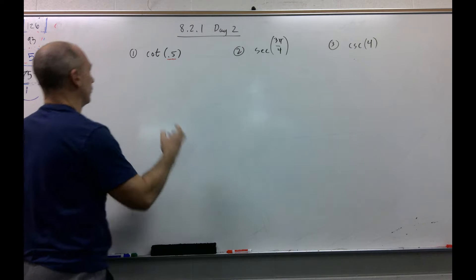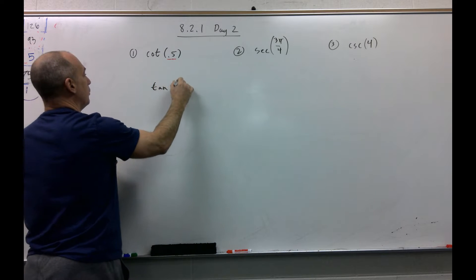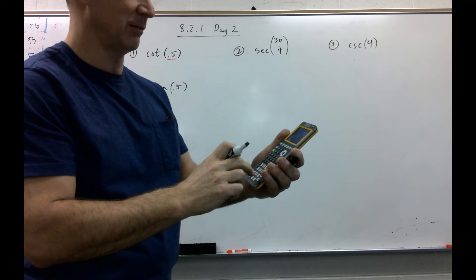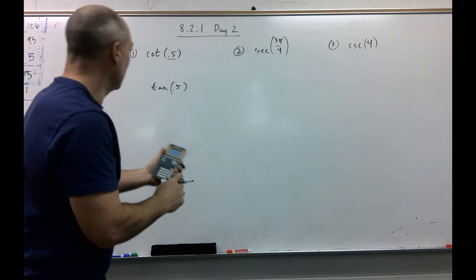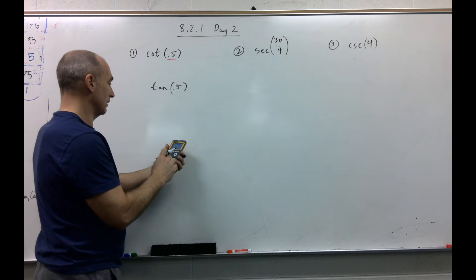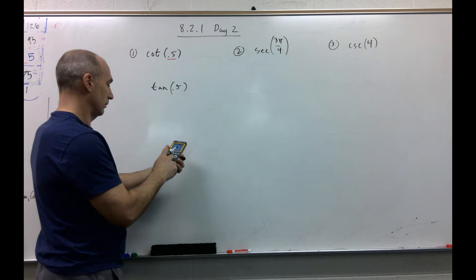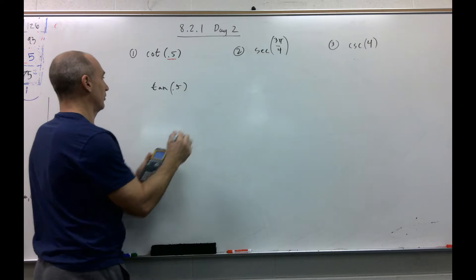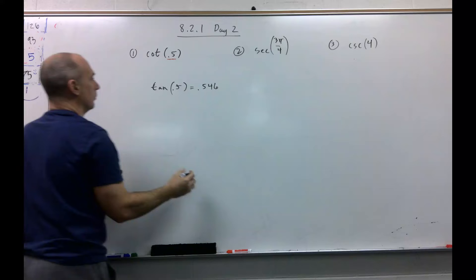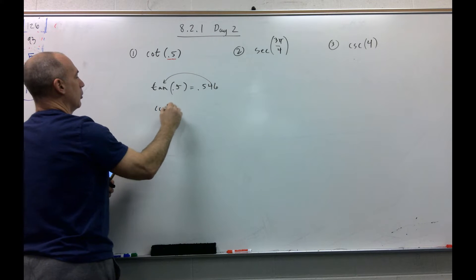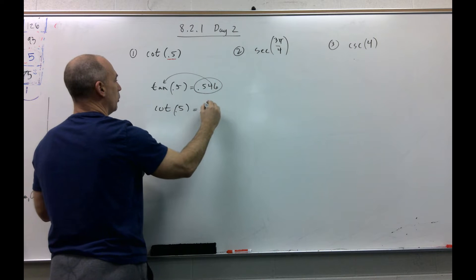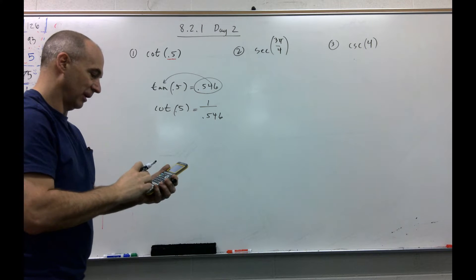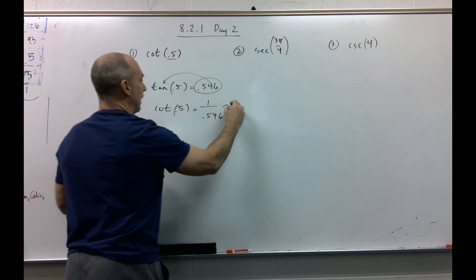We are now going to first find tangent of 0.5 radians. So go to your calculator, go to the mode, make sure you go down, highlight radians, and then I'm clearing it out. And so now tangent of 0.5 radians is 0.546. So if this is my answer to tangent, then cotangent of 0.5 must be this reciprocal. That would be 1 over 0.546, approximately 1.83.